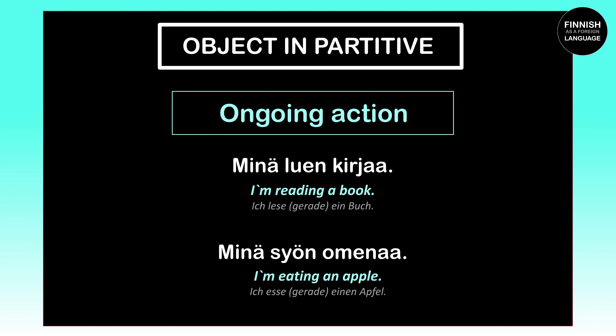Next example: 'Minä syön omenaa' means 'I eat an apple.' Our object here is the apple, which is 'omena' in Finnish. I'm eating the apple right now in this very moment, so we have to put 'omena' into the partitive case. That is why 'omena' becomes 'omenaa' — with two a's. That's the partitive case.